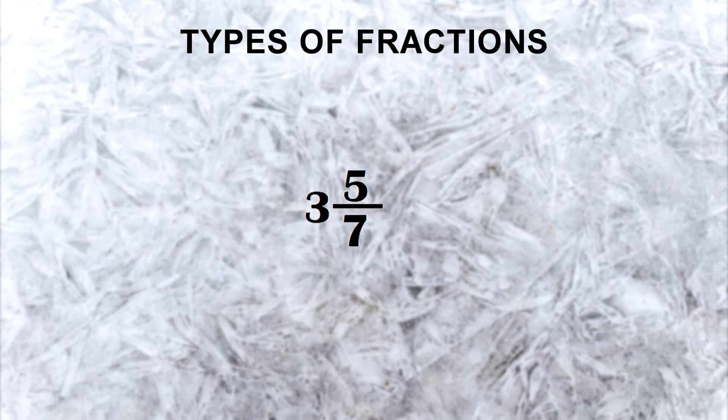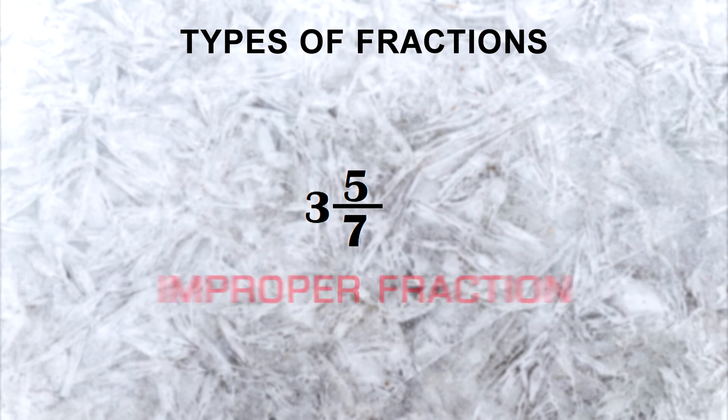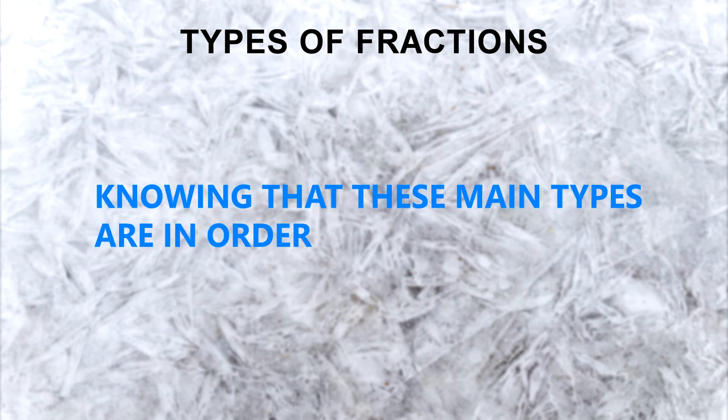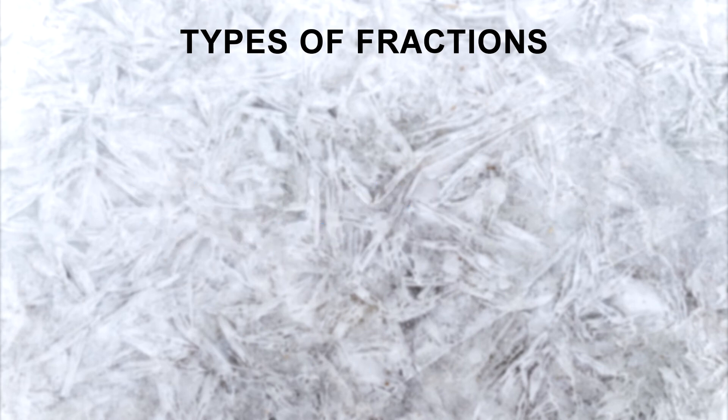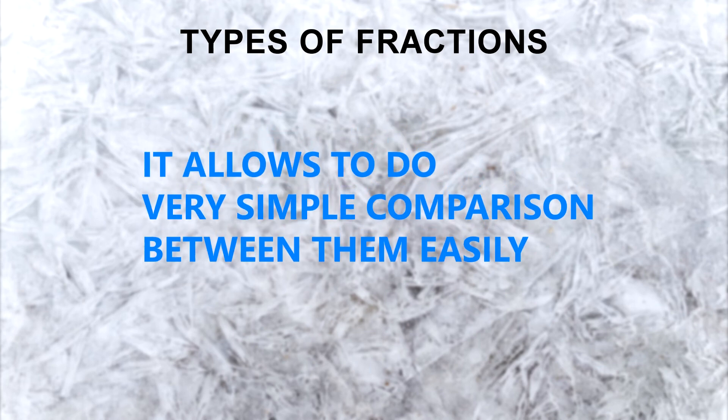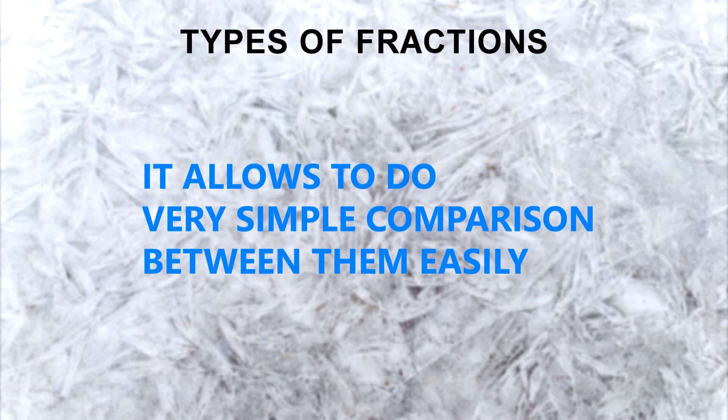Like if you have 3 and 5 over 7, then this is called a mixed fraction, which is another form of improper fraction. Knowing that these main types are in order from smallest to largest on the number line, it allows us to do very simple comparisons between them easily.